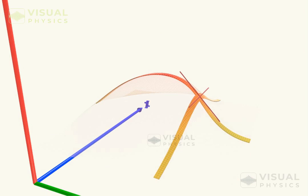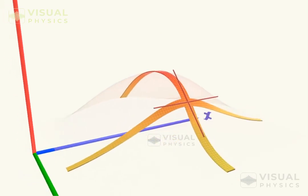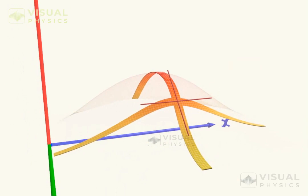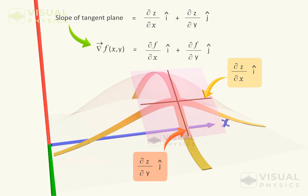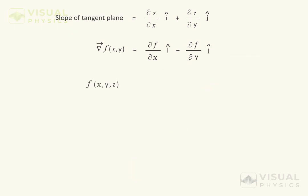Using these two slopes together, we can say that the slope of the tangent plane at this point will be the vector sum of the slopes of these tangent lines. This is what is meant by partial derivatives. Extending this logic for a 3D function, the partial derivative of a function is equal to the corresponding gradient terms.